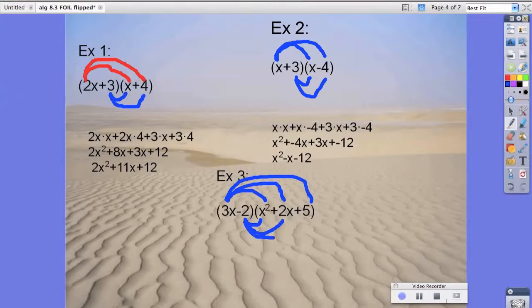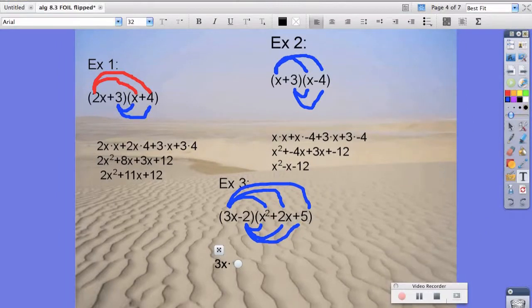and 5. So, we get 3x times x squared, plus 3x times 2x, plus 3x times 5. So that's the first set of grouping.